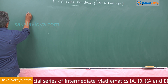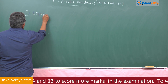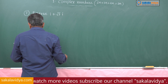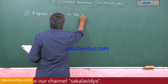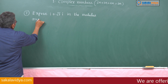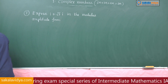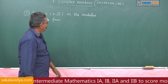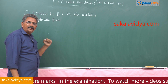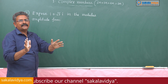Seventh problem: express 1 plus root 3 i in the modulus-amplitude form. The same question may be asked as polar form or trigonometric form. The same method has to be adopted, meaning we have to write it in the r times (cos θ plus i sin θ) form.